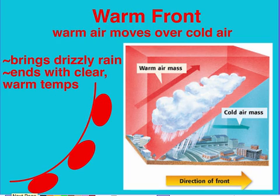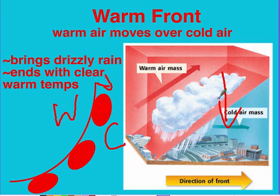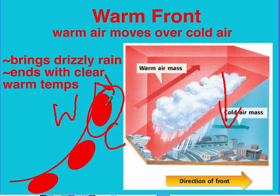The next type of front is a warm front. In this case, the warm air mass is stronger — it moves over the cold air mass and then moves down, overtaking it. This brings drizzly rain followed by warmer temperatures. Looking at the symbol, you can see the direction the front is moving. Since it's a warm front, the warm air is on one side and the cold air is on the other side.